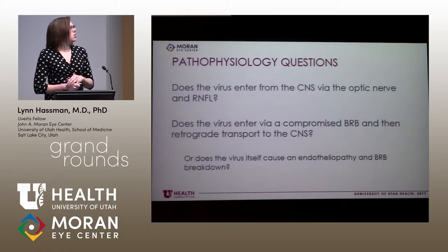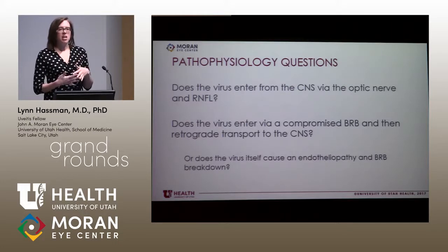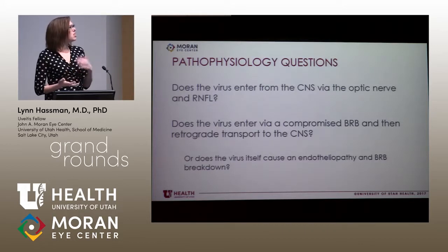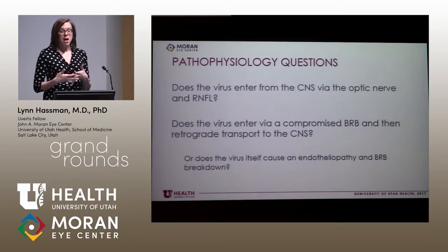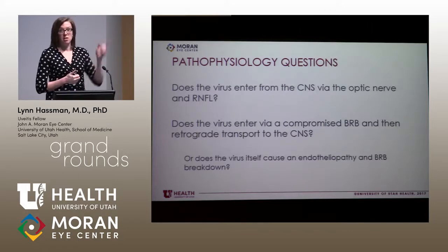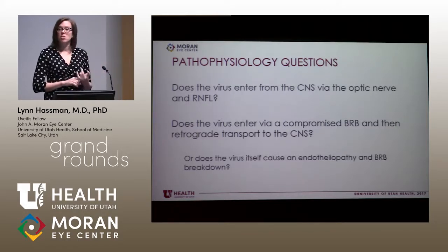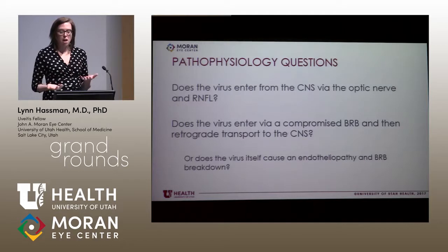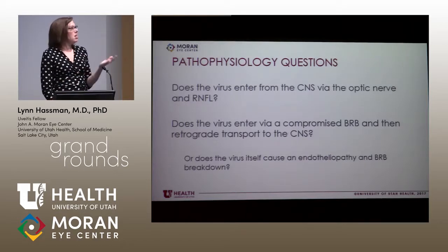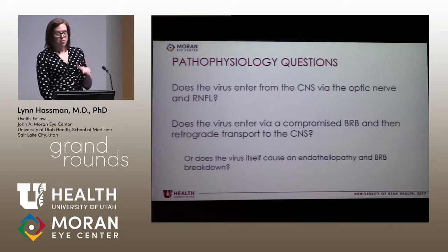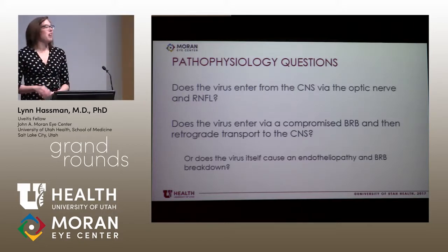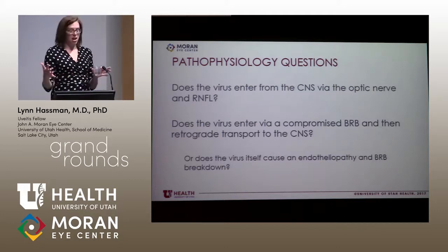Some pathophysiology questions: does the virus enter the eye from the CNS via the optic nerve and the nerve fiber layer? Or does it enter via a compromised blood-retinal barrier and then undergo retrograde transport into the CNS? It's been associated with diabetic retinopathy, which involves blood-retinal barrier compromise. But potentially the virus itself, as shown in mouse models, could cause an endotheliopathy and diabetic retinopathy-like picture and get into the retina through its own breakdown of the blood-retinal barrier.